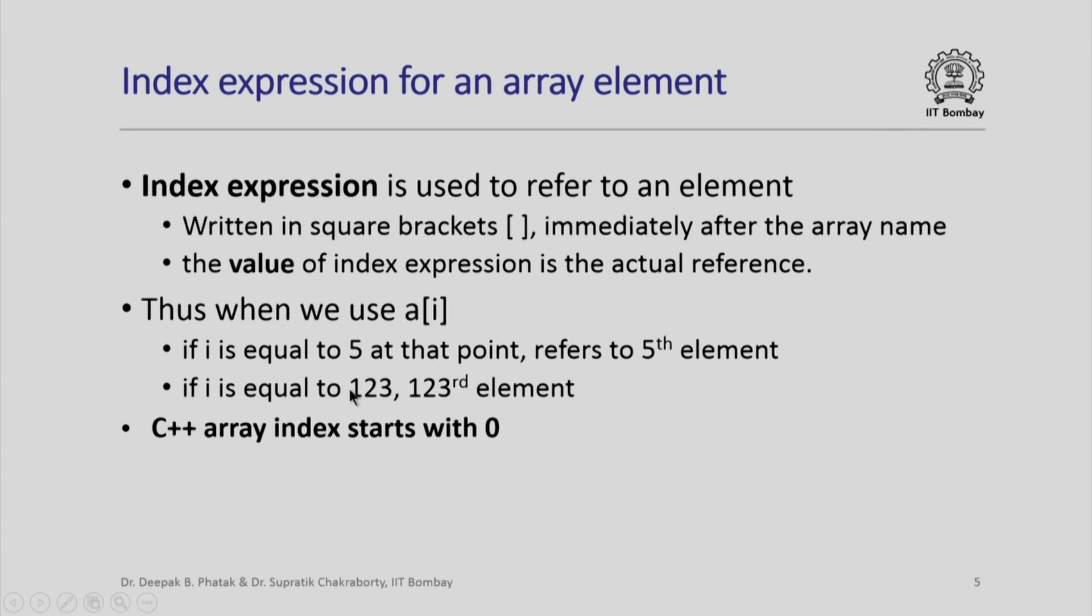If i is equal to 123, a[i] refers to the 123rd element. There is one hitch, however. Notice that in our discussion on arrays, we assume that the index will start from 1, 2, 3, 4. Unfortunately, the index in C++ always starts with 0. That means the very first element in the array is actually the 0th element, then first element, second element, etcetera.